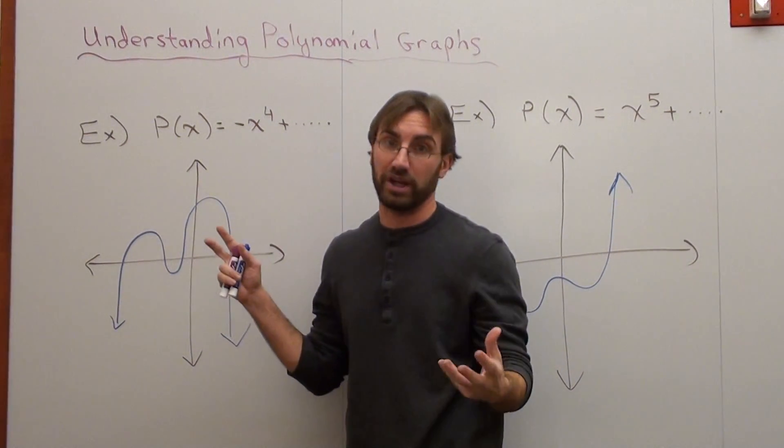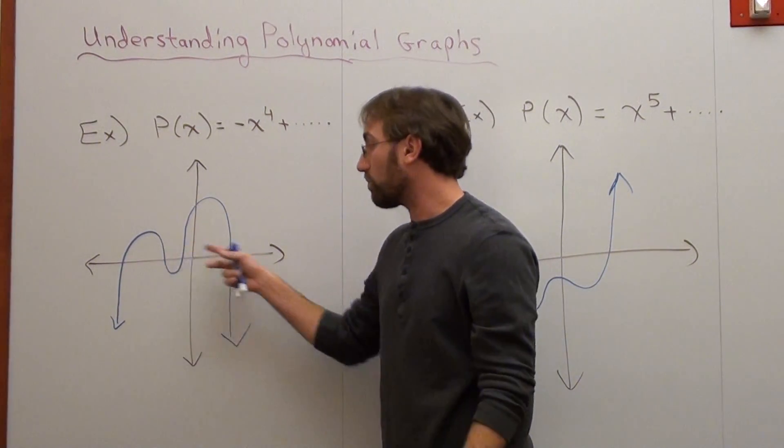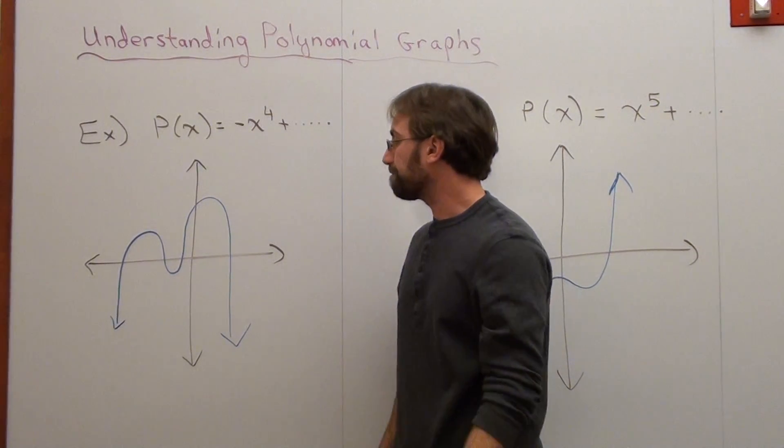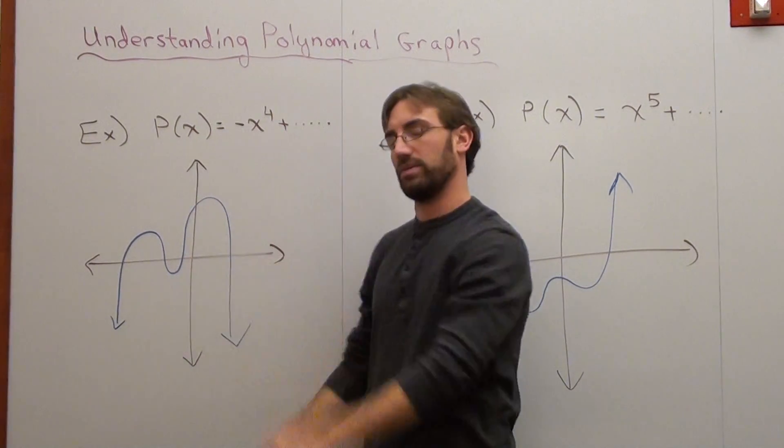So it's got four zeros. None of them are repeating. They're all real. When we learn to find zeros, that will be fascinating. And it's a negative function, and it's even, because both arrows are pointing the same direction.